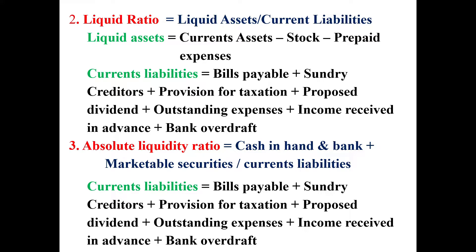Next, Liquid Ratio. The formula is: Liquid Assets divided by Current Liabilities. Liquid Assets equals Current Assets minus Stock and Prepaid Expenses. Current liabilities are the same: bills payable, sundry creditors, provision for taxation, proposed dividend, outstanding expenses, income received in advance, and bank overdraft.